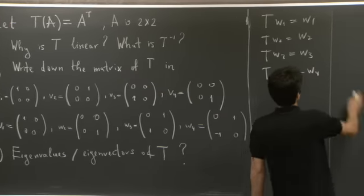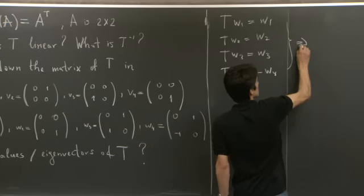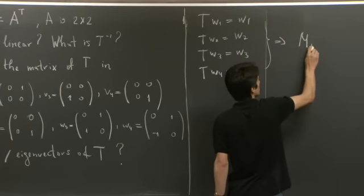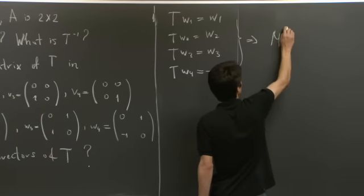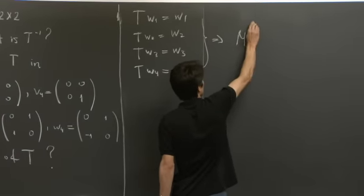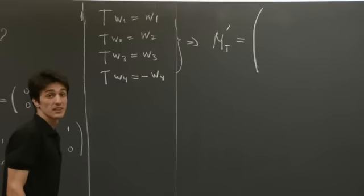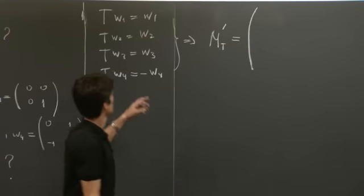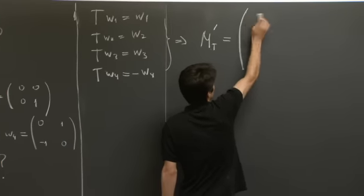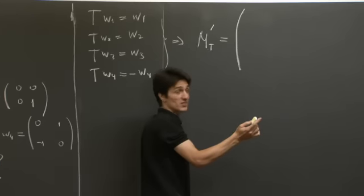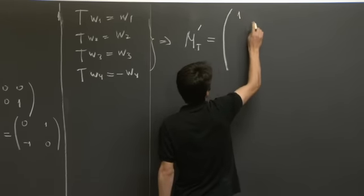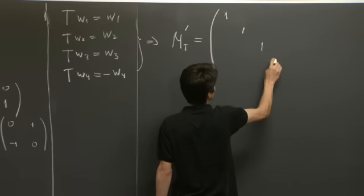So therefore, the matrix of the linear transformation T in this basis, I'm going to call the matrix M prime T, has a fairly simple expression. It's just, the only non-zero entries are on the diagonal, and they're precisely 1, 1, 1, and negative 1.